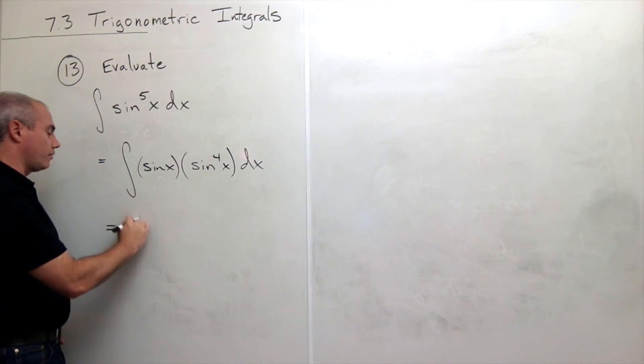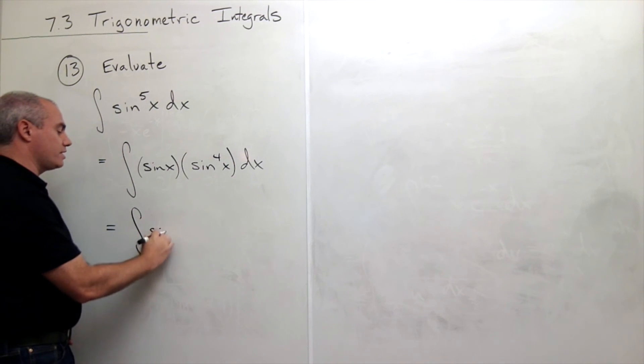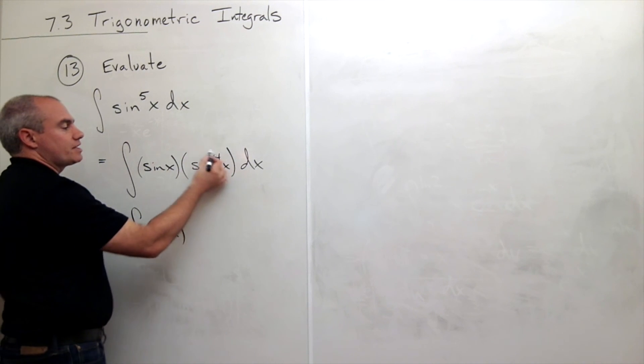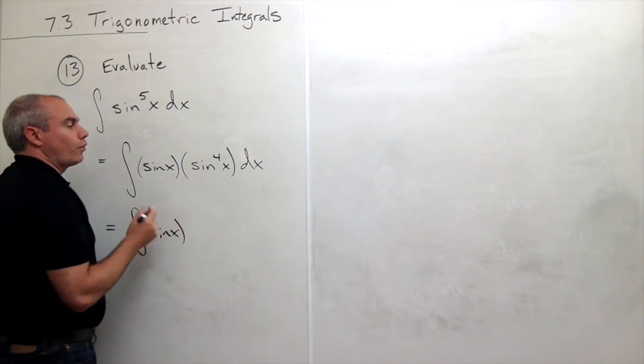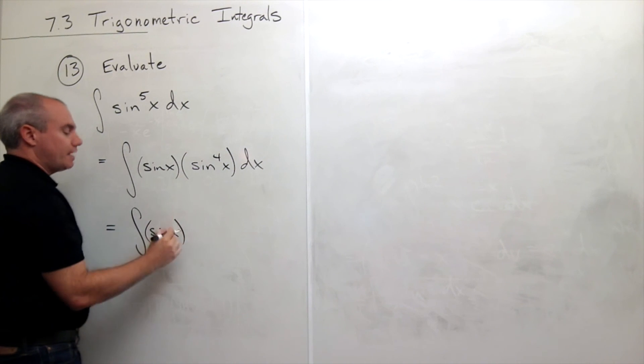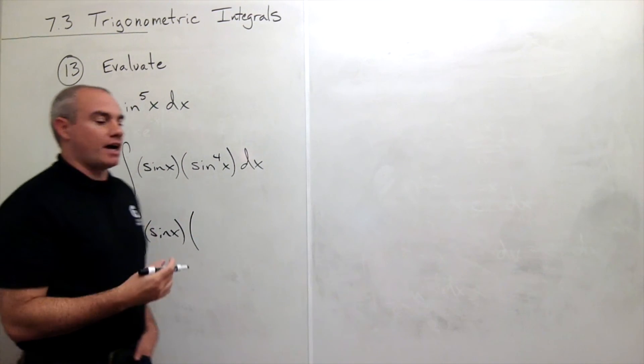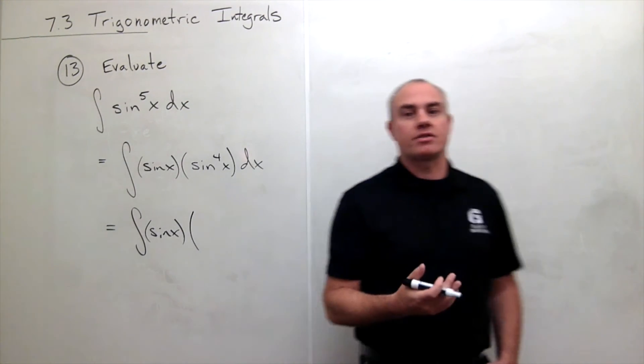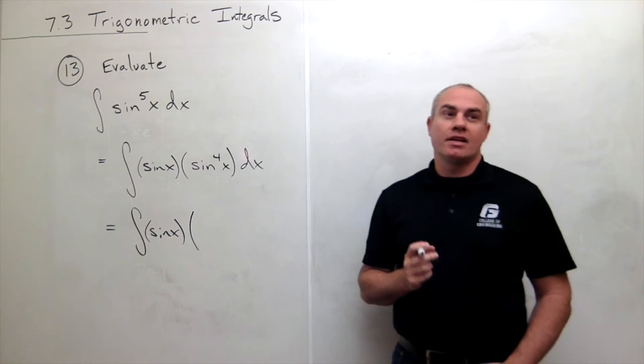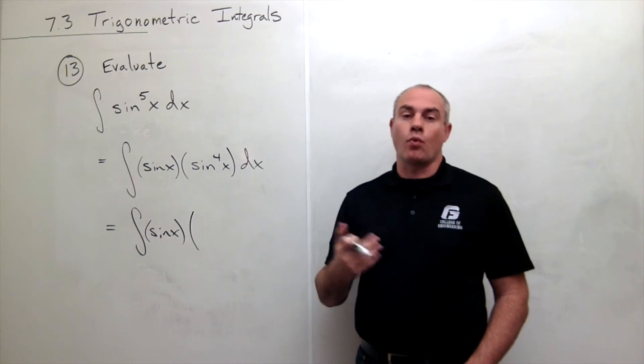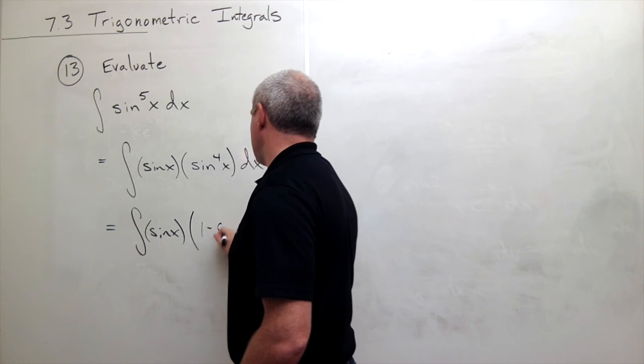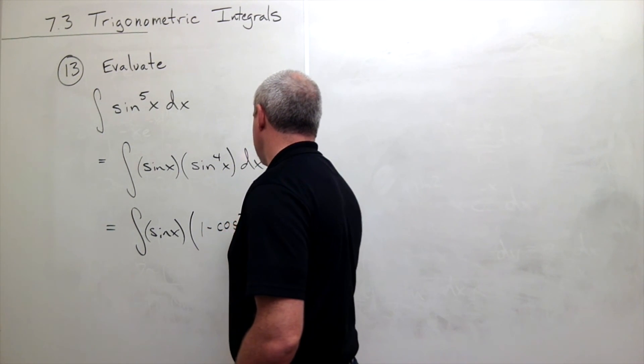Now I'm going to rewrite this again. I'm going to leave this sine of x sitting out here by itself, and now I'm going to change all of the sine of x to the fourths and convert them to cosines. The way that I'm going to do that is remember that sine squared of x plus cosine squared of x is equal to one. So sine squared of x is the same thing as one minus cosine squared of x.